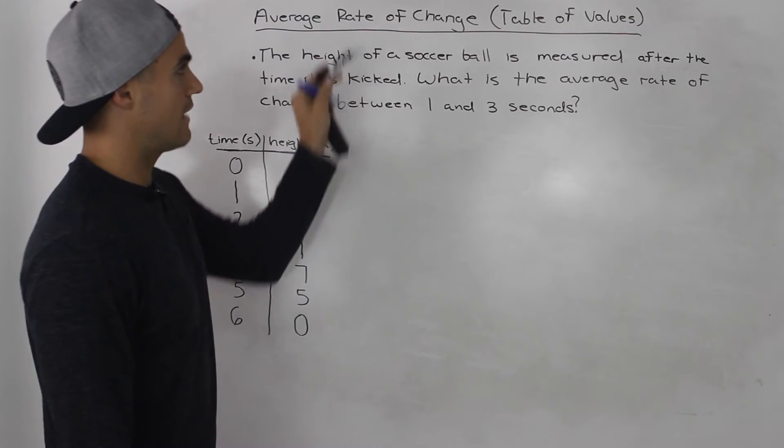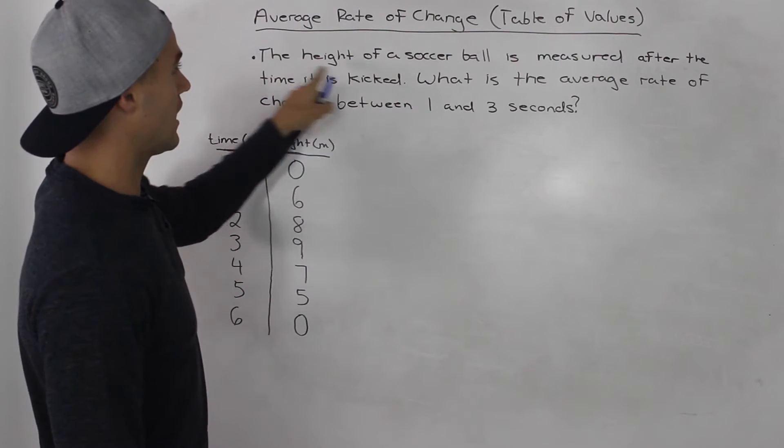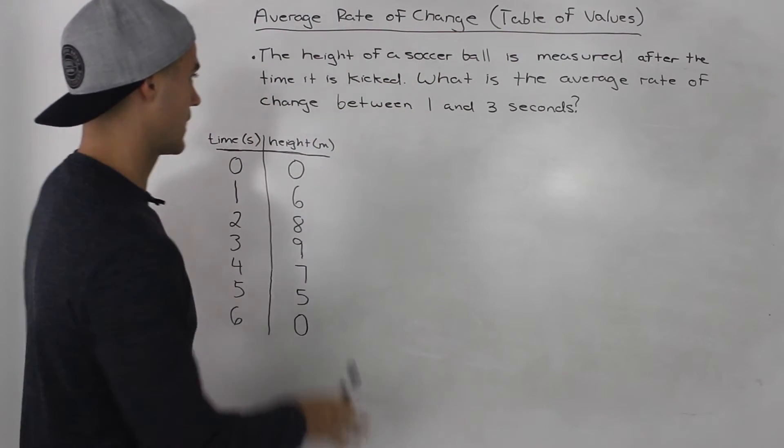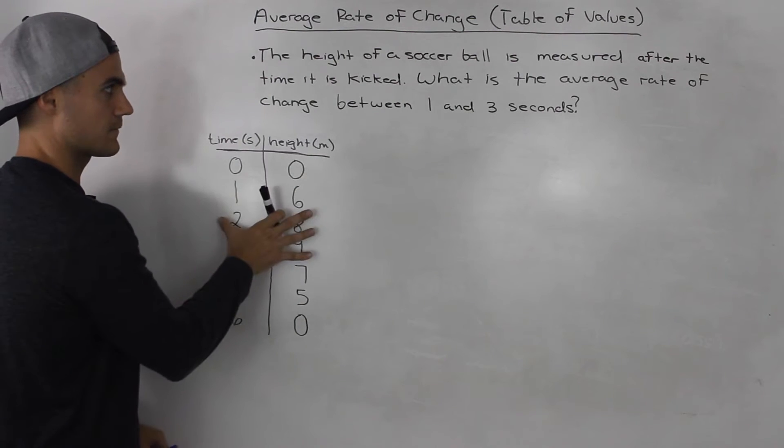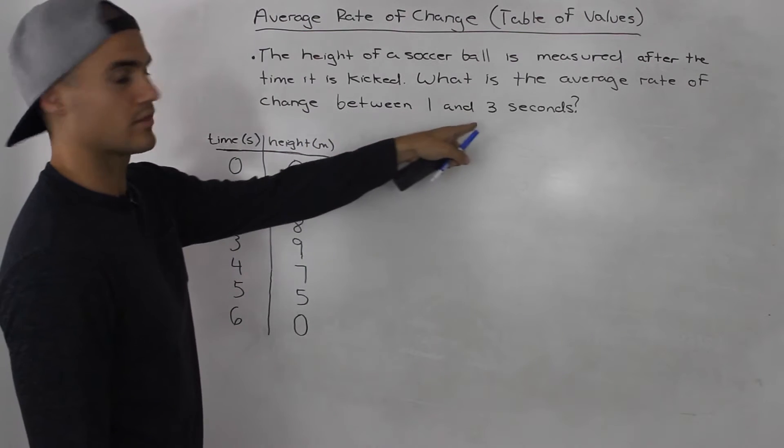In this example, we're going to find the average rate of change from a table of values. The height of a soccer ball is measured after the time it is kicked. These are the observations of that kick here in this table. What is the average rate of change between 1 and 3 seconds?